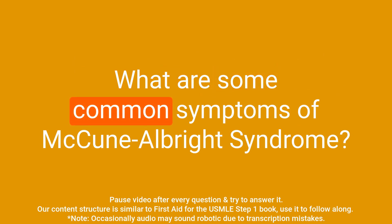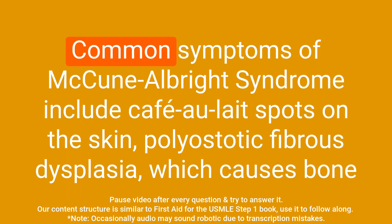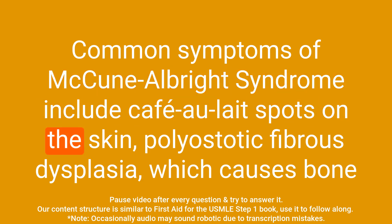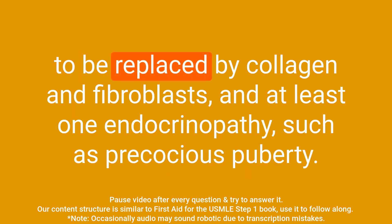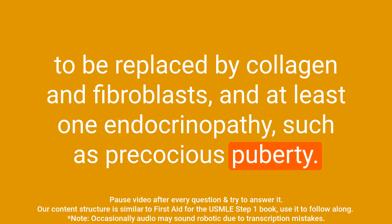Question: What are some common symptoms of McCune-Albright syndrome? Answer: Common symptoms of McCune-Albright syndrome include café-au-lait spots on the skin, polyostotic fibrous dysplasia — which causes bone to be replaced by collagen and fibroblasts — and at least one endocrinopathy, such as precocious puberty.